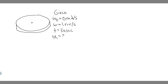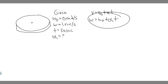Which kinematic equation do we want to use? The equation is V equals V sub zero plus A times T, but for rotational kinematics. You replace each kinematic variable with its corresponding rotational one, so it becomes omega equals omega zero plus alpha times T. We know omega, omega zero, and T, so we can solve for alpha.